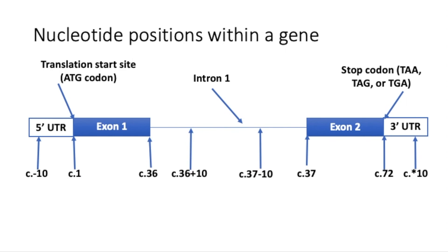Nucleotide positions in the 5' UTR are named backwards from the C dot 1 translation start site. So a nucleotide that is 10 nucleotides upstream of the C dot 1 nucleotide position in exon 1 would be called C dot minus 10. Nucleotide positions in the 3' UTR are named relative to the stop codon using an asterisk notation. A nucleotide that is 10 nucleotides downstream of the C dot 72 nucleotide position in exon 2 would be called C dot star 10.